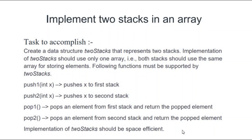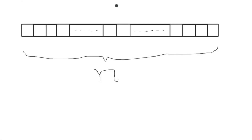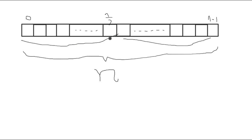For the first approach, we create an array of size n. We simply divide this array in half — from index 0 to n/2 for the first stack, and from index n/2+1 to n-1 for the second stack. As you can see, the array is divided into two parts, but this partition is fixed and cannot be altered.